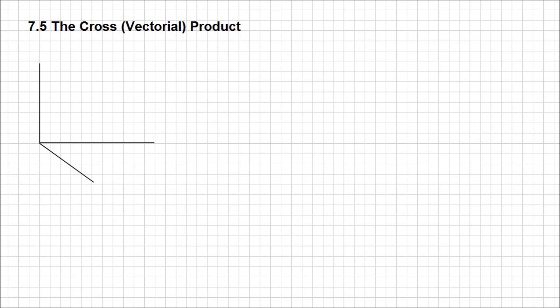Hello. In this lesson, we're going to talk about the cross product, or vectorial product. The cross refers to the symbol that we utilize when we write down such a product. However, vectorial product is a more appropriate name because it gives you a very clear indication as to what the result of this product is going to be — it's going to be a vector.